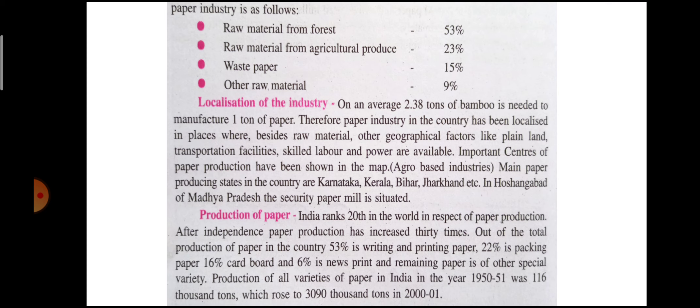If we look at the distribution of paper industries across states in India, we see the localization of industries. On average, 2.38 tons of bamboo is needed to manufacture 1 ton of paper. Therefore, paper industry in the country has been localized in places where, besides raw material, other geographical factors like planned land, transportation facilities, skilled labor, and power are available.